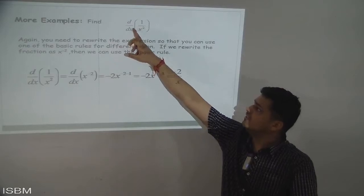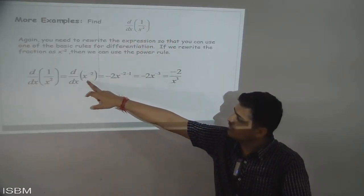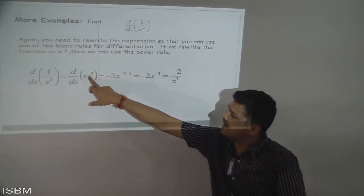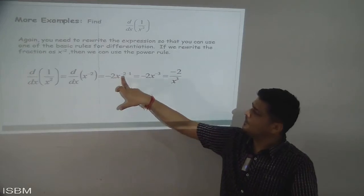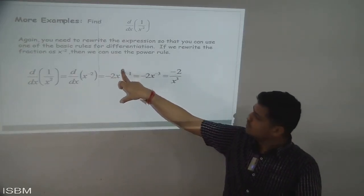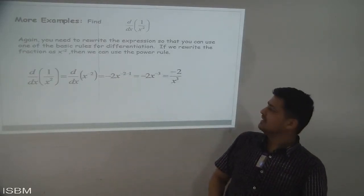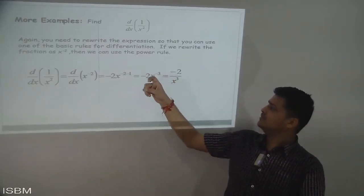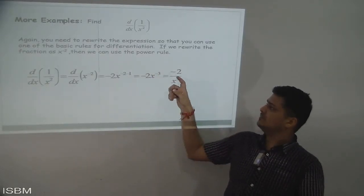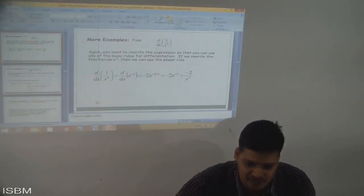Solving d/dx of x^(−2): bring the exponent down, so −2 comes out front and the new power is −2 − 1 = −3, giving −2·x^(−3). Moving x^(−3) to the denominator gives −2/x³. This is a simple application of the power rule.